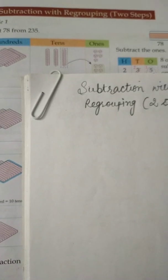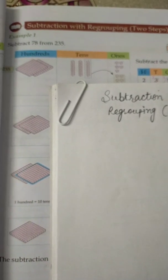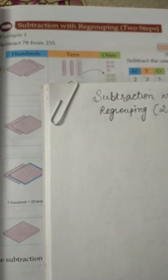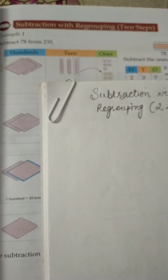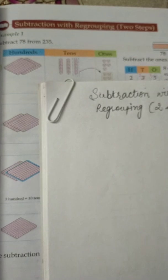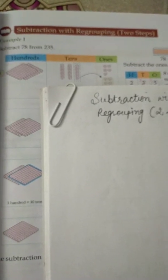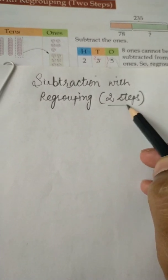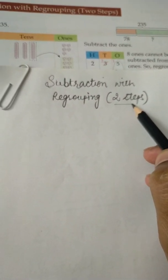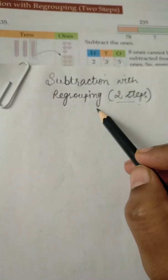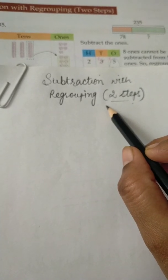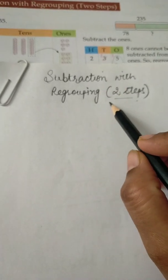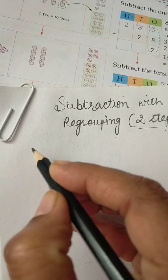Hello students, hope everyone is fit and fine at your homes. I'm your math teacher Mrs. Monica Sharma from California Public School. Today in this video tutorial we will do subtraction with regrouping two steps. In the last video I told you about subtraction with regrouping one step. Now today we will do subtraction with regrouping two steps. I'm going to explain with the help of one example.